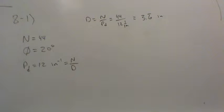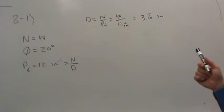Now that's not the outside diameter. That's the pitch diameter. So to get the outside diameter, you'd have to add twice the addendum to that. But we'll get to that in a minute.